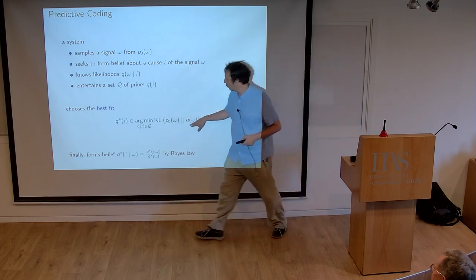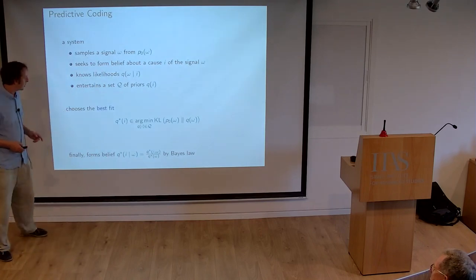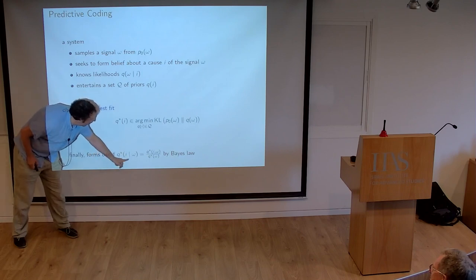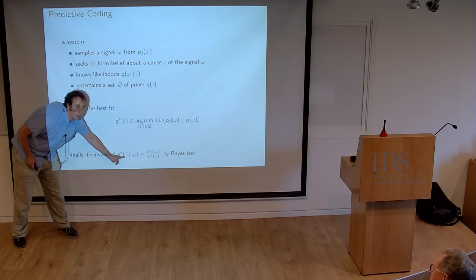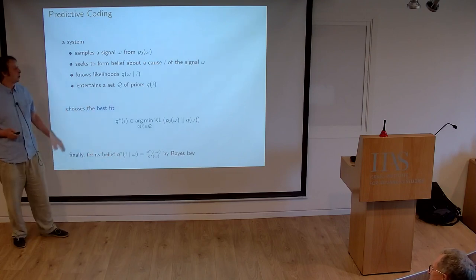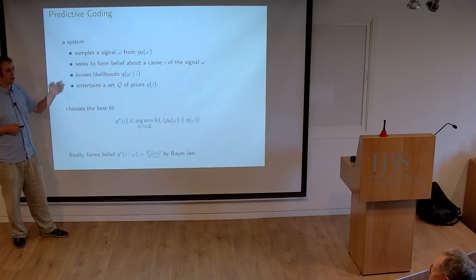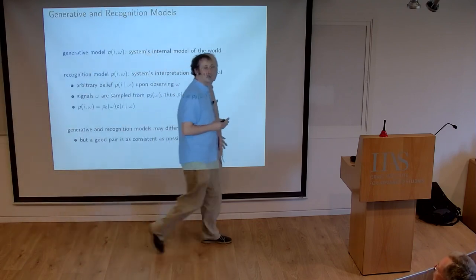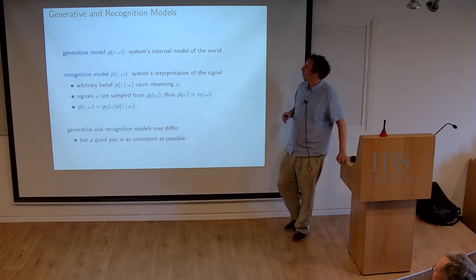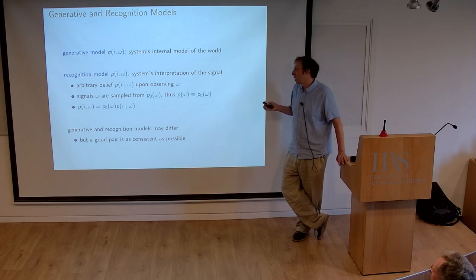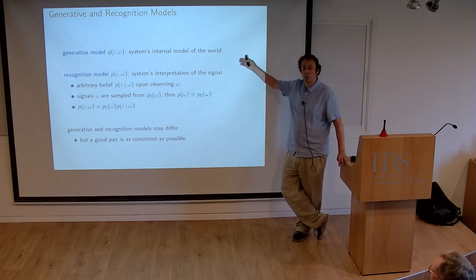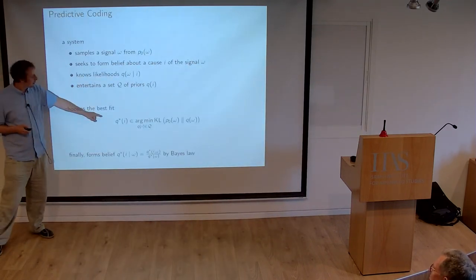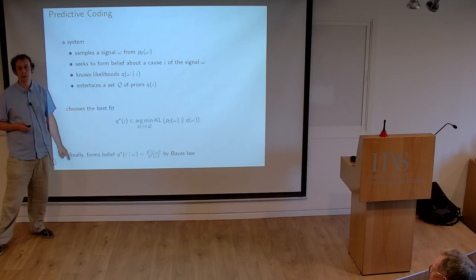Once the system picks the best-fit prior, it can form conditional beliefs about the cause given any observed signal — Bayesian updating. But Rava pointed out this is not how actual machines do it, because it's intractable: finding the best fit is difficult, and Bayesian updating requires computing marginal distributions involving integration over all parameters, which is computationally infeasible at scale. So the literature introduces a different, equivalent formulation.